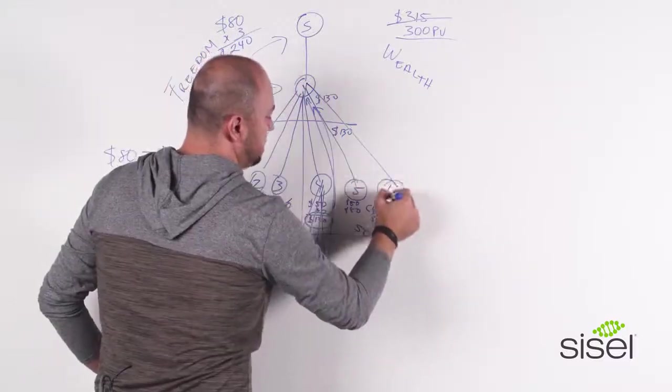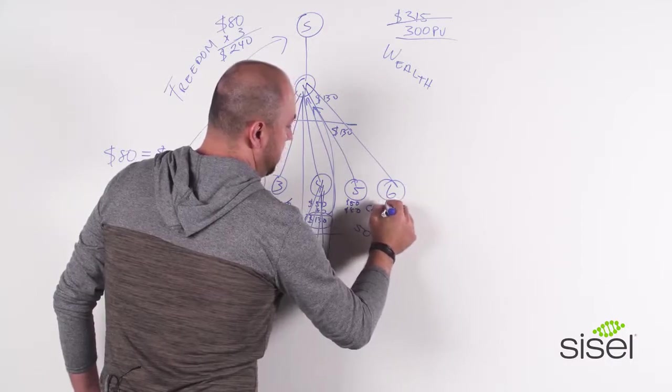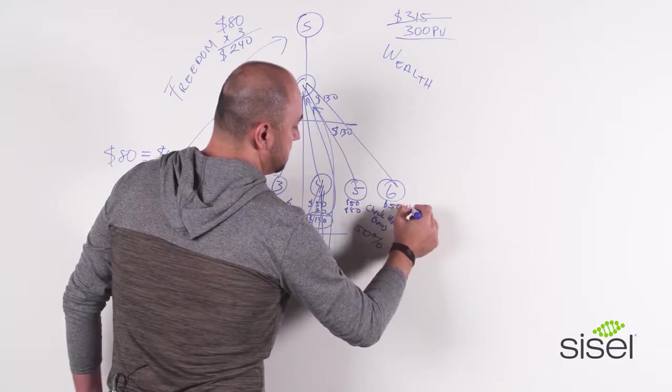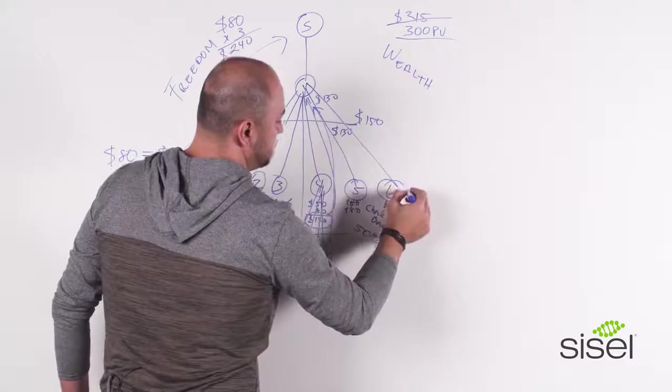What happens when you get number six? Remember, $50, again, for signing up. But now, instead of getting $80, you're going to get $100. So you'll get a total of $150 when you sign up number six.